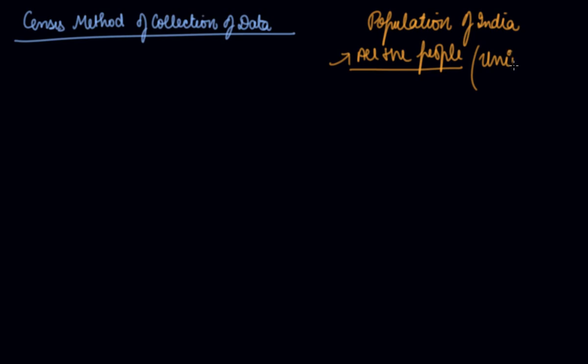that is the census method. You want to find out the population of India. So what you do? You collect the data for all the persons, all the people in India. So this is the universe. You are collecting the data of the universe of the particular investigation. What is your investigation? Your population.